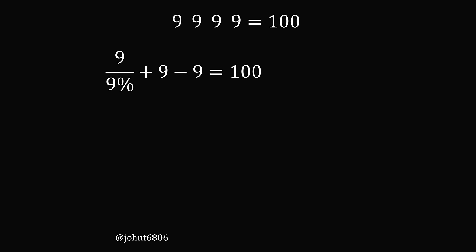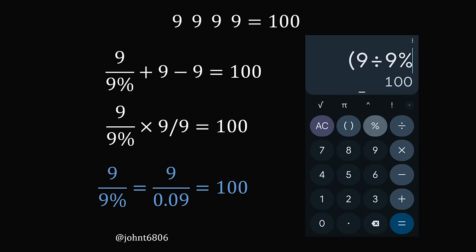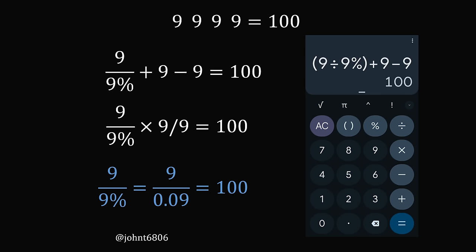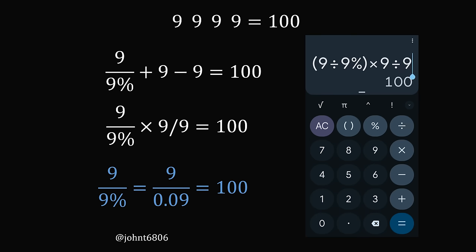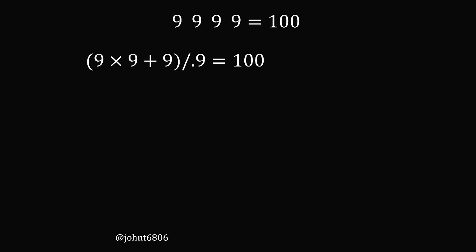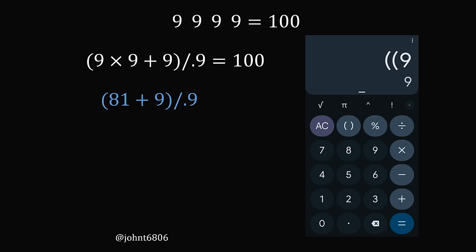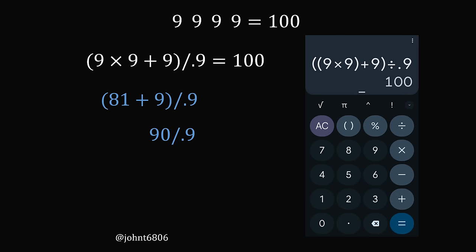We have 9 divided by 9% plus 9 minus 9 equals 100. Or similarly, 9 divided by 9% multiplied by 9 over 9 equals 100. This is because 9 divided by 9% equals 9 divided by 0.09, which equals 100. You can then add 9 and subtract 9, or multiply by 9/9 which equals 1, and you'll end up with 100. Another solution: 9 times 9 plus 9, take that whole thing and divide it by .9. The numerator becomes 81 plus 9, giving 90 divided by .9, which equals 100.